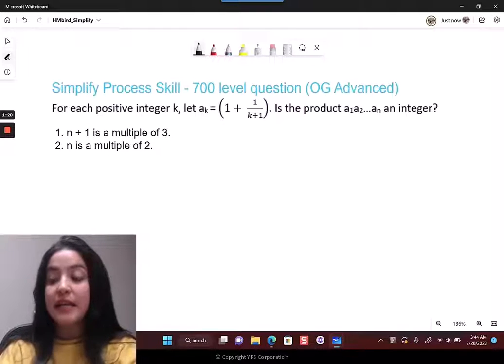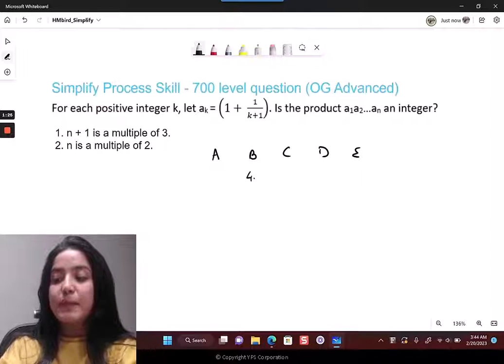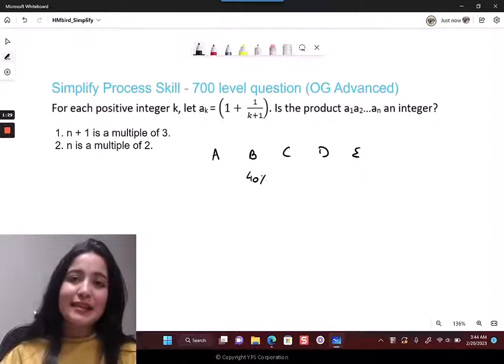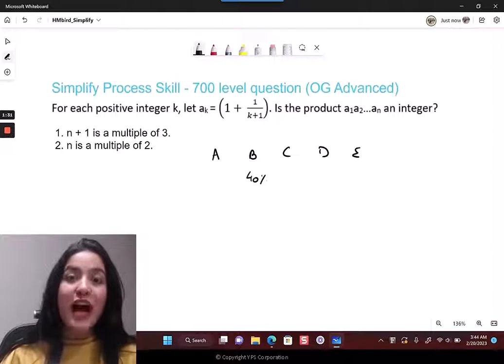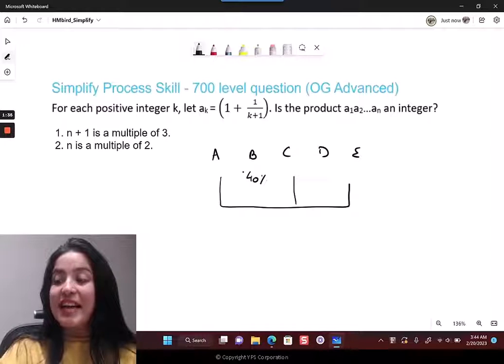This question has a very low accuracy. The correct answer here is choice B, and only 40% of all test takers get this question correct. That proves how difficult people are finding this.